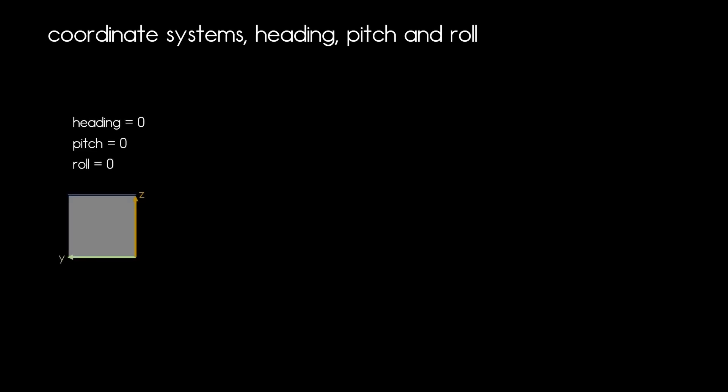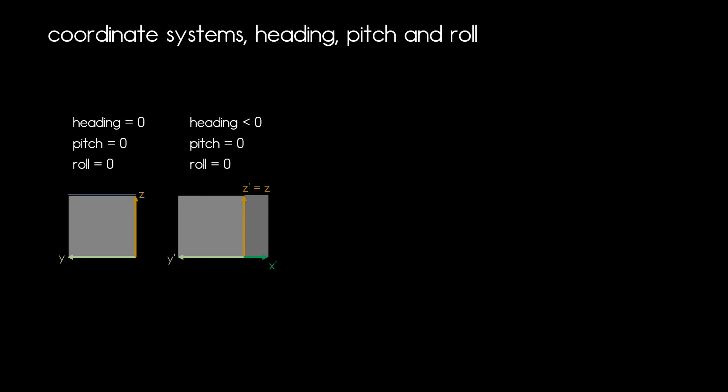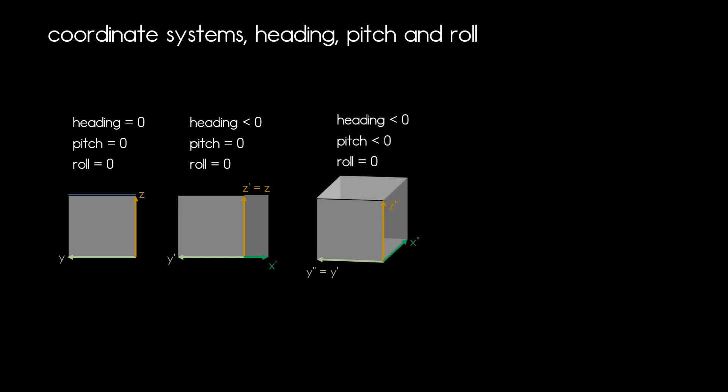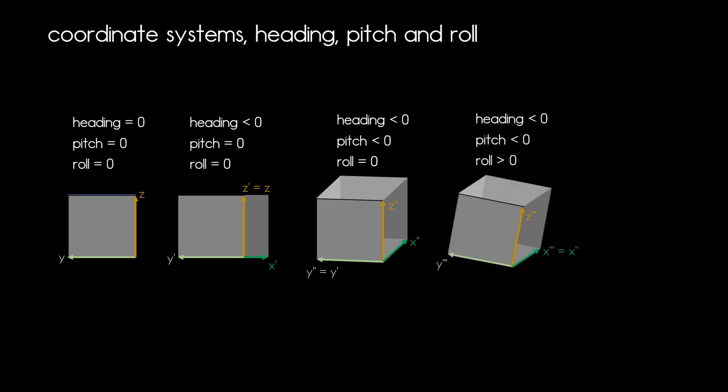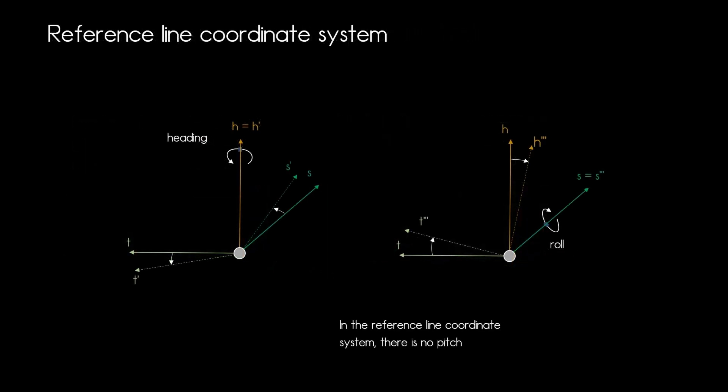In OpenDrive there is also a convention on how pitch, roll, and heading are used. Heading is a rotation around the z-axis of the system. Pitch is a rotation about the y-axis — and importantly, the reference line system has no pitch, which is very important to remember. Roll is a rotation around the x-axis; in the local system this is the u-axis, and in the reference line system this is the s-axis. So the reference line system has only a heading and roll — there is no pitch. When it comes to elevation of roads this is very important and I will make a dedicated video just on this.